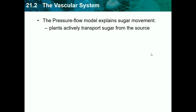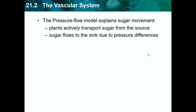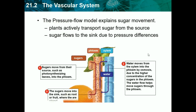The pressure flow model explains sugar movement. Plants actively transport sugar from the source. Active transport is when the plant wants to do it — when the plant makes sugar, it moves it away; if it's not making sugar, nothing is transported. Sugar flows to the sink due to pressure differences. Sugar moves from the source, such as photosynthesizing leaves, into the phloem. Water also moves from the xylem into the phloem by osmosis due to the higher concentration of sugar, and this water flow helps move sugar through the phloem to the sink, such as roots or fruit, where it is stored.